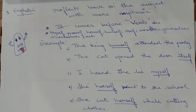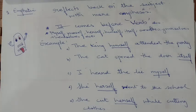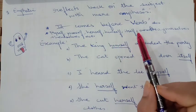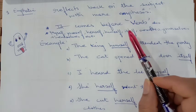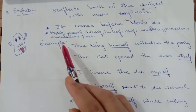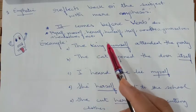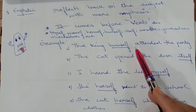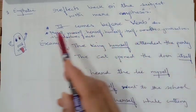Emphatic pronoun — an emphatic pronoun reflects back on the subject with more emphasis. It gives more stress on the subject. Kindly note: it comes before the verb. Myself, yourself, herself, himself, itself, ourselves, yourselves — these are also all your emphatic pronouns.